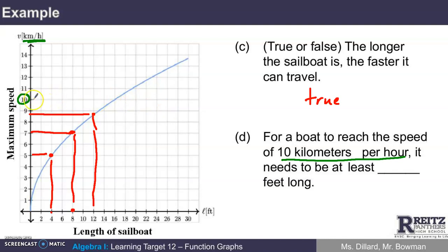The question is, how long does the boat need to be? Let's see if we can use the graph to figure it out. It looks like I see that point right there. How about an answer of about 16? It must be at least 16 feet long to reach the speed of 10 kilometers per hour.